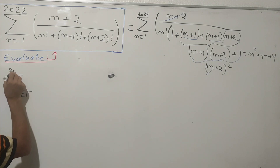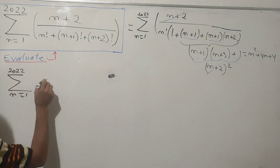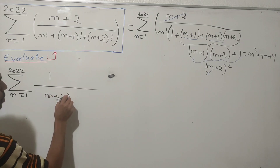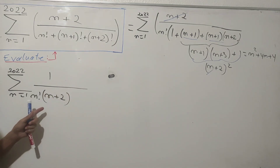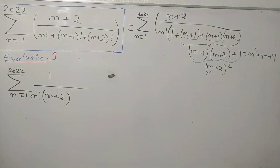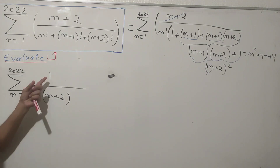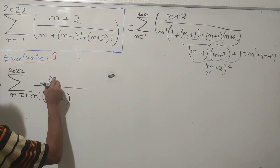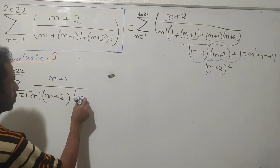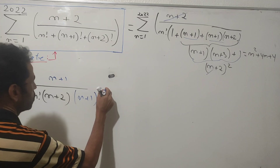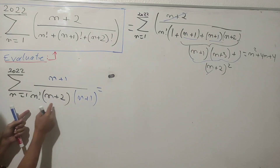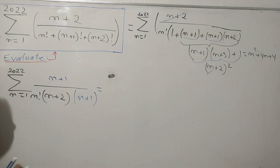The new sum as n goes from 1 to 2022 is 1 over n factorial times (n+2). To simplify further, I multiply numerator and denominator by (n+1), because n factorial times (n+1) times (n+2) equals (n+2) factorial.